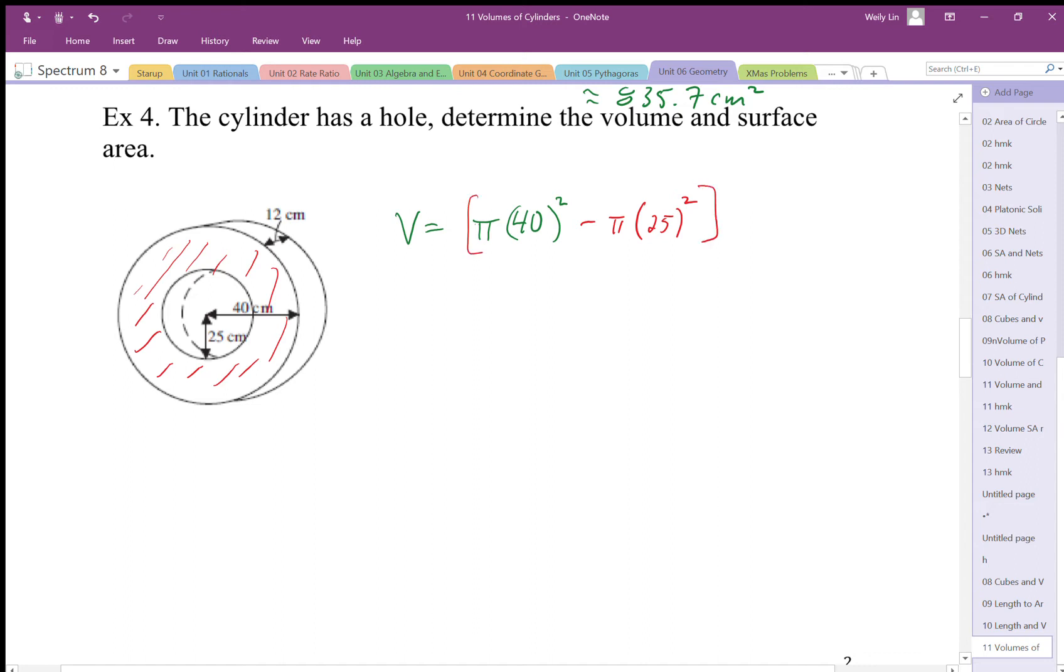So that's going to be the area of that red surface. That is called a washer, that donut shape there. The area of that surface times the thickness which is 12 centimeters is going to give us the volume of this object. When we multiply this all together, we're going to end up with 1600π minus 625, so I think that's going to be 975π.